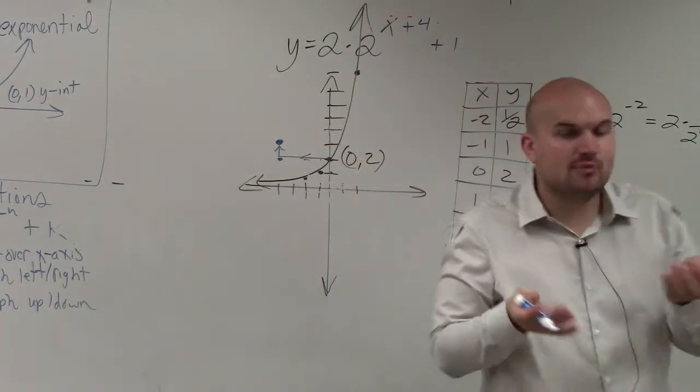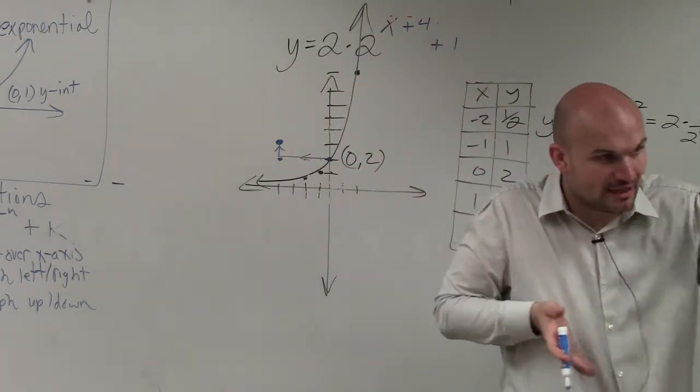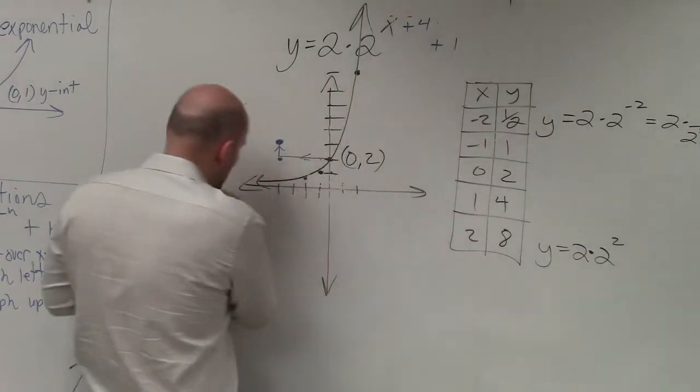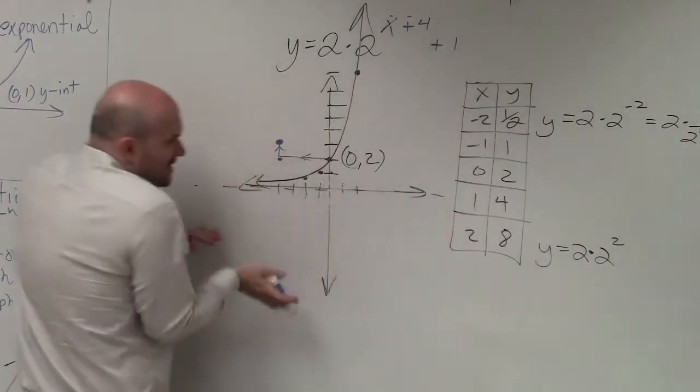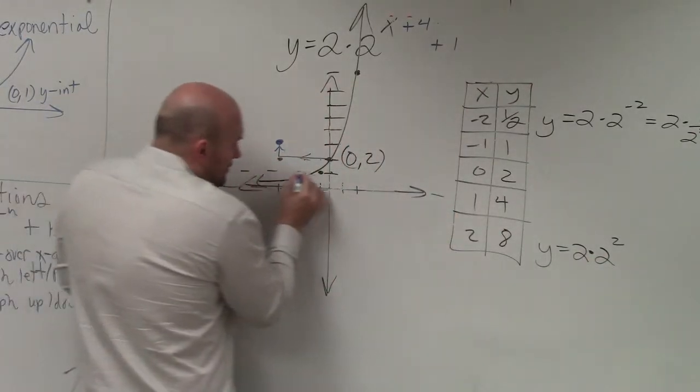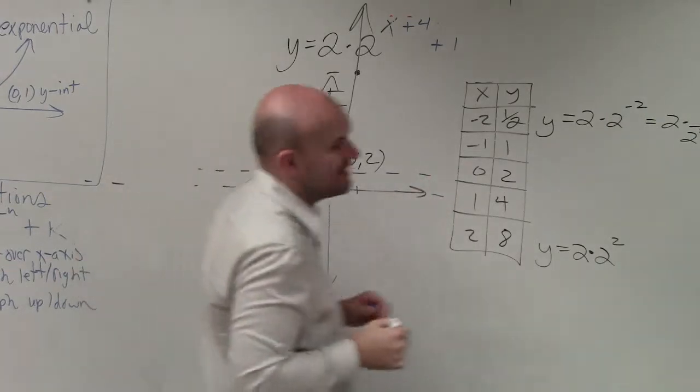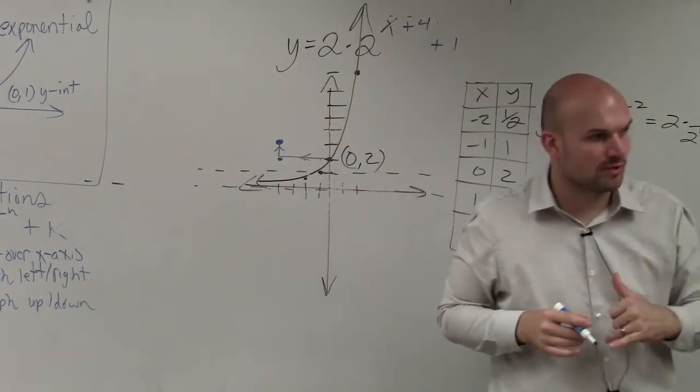The other thing that's important is, since I have a vertical transformation, remember there's a horizontal asymptote. The horizontal asymptote is at 0. So if I shift this graph up 1, now the horizontal asymptote is at y equals 1.